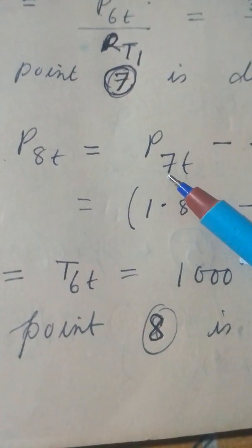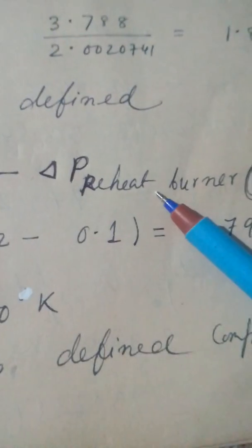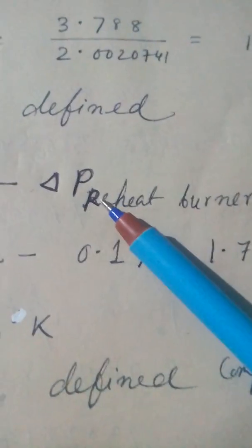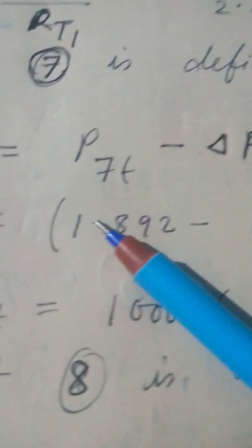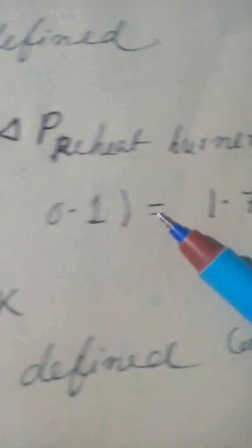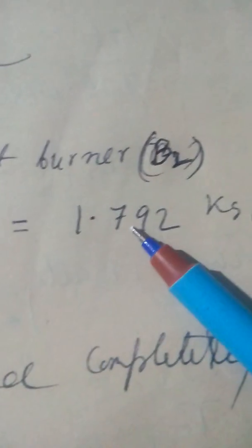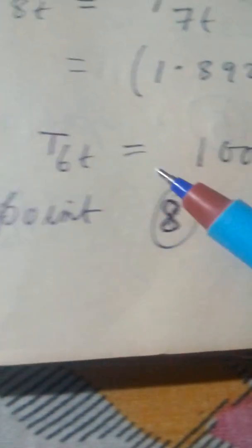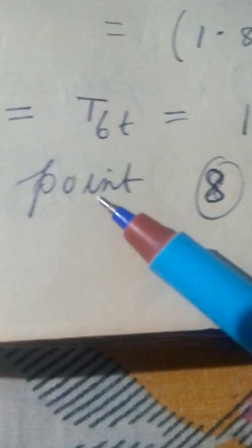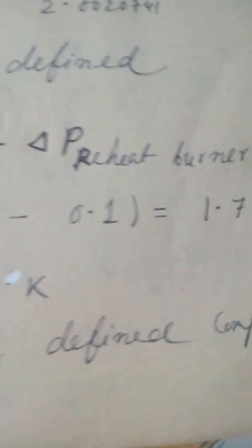Now you see step 8. P8T, I roll on. Delta P in the heat exchanger, reheat burner B2. So this is, this is given, this is delta P is given. kg per centimeter square. So T8T is equal to T6T is equal to 1000 Kelvin. This I have told you earlier, this is maximum temperature of the plant. Thus point 8 is defined completely.